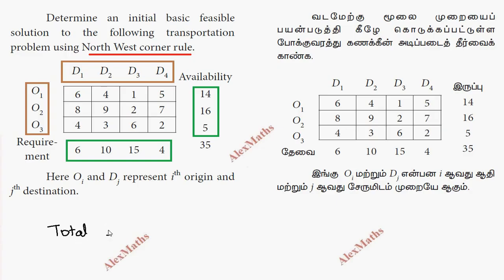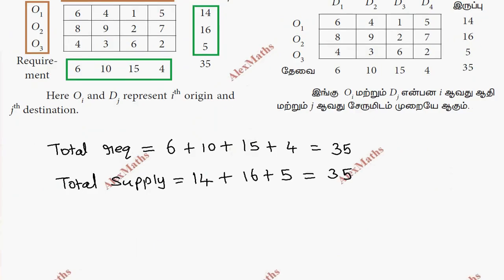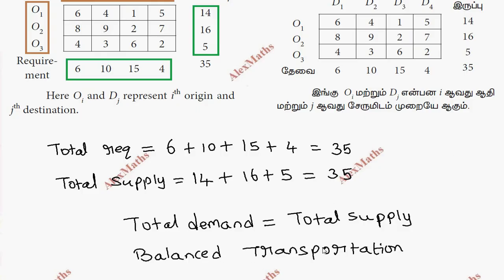First, we calculate the total requirements. Total demand equals 6 plus 10 plus 15 plus 4, which equals 35. Next, we calculate total supply or total availability: 14 plus 16 plus 5 equals 35. So total demand equals total supply, meaning we have a balanced transportation problem.